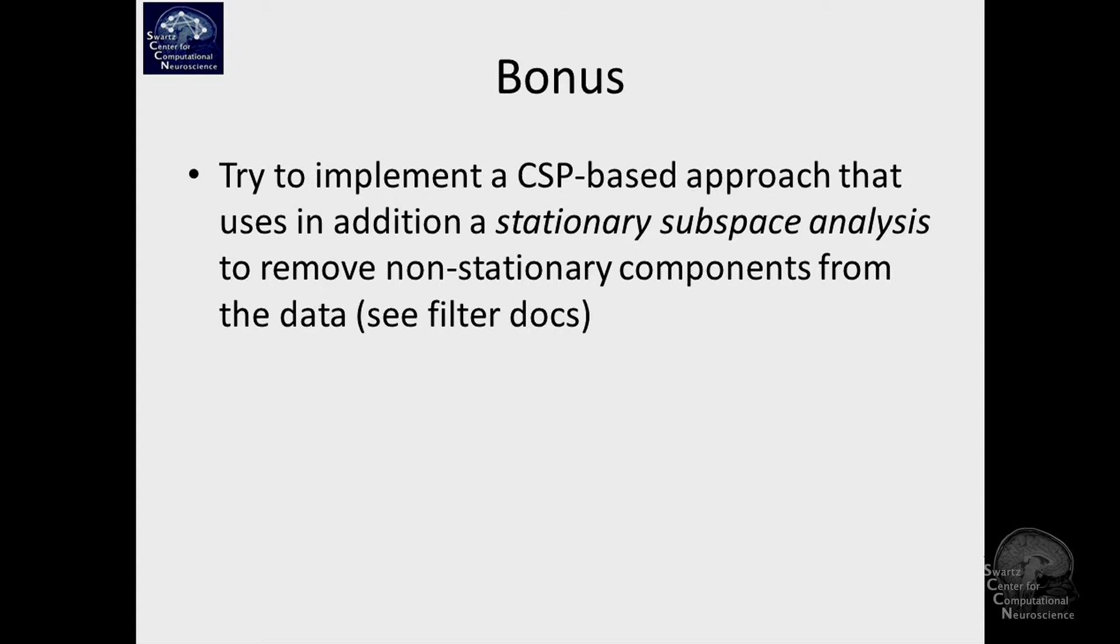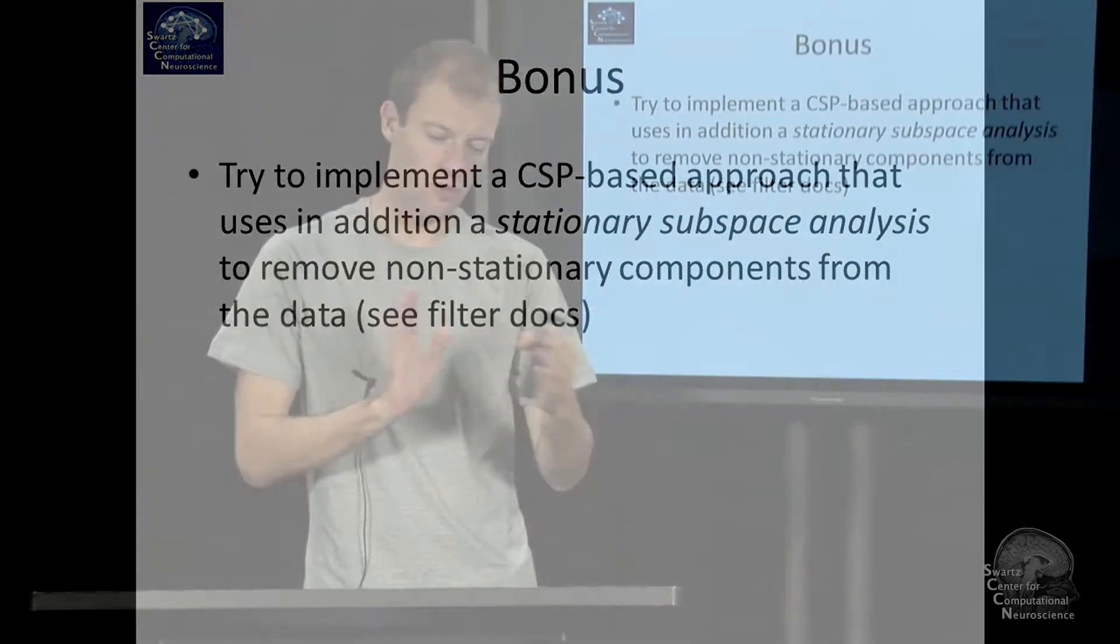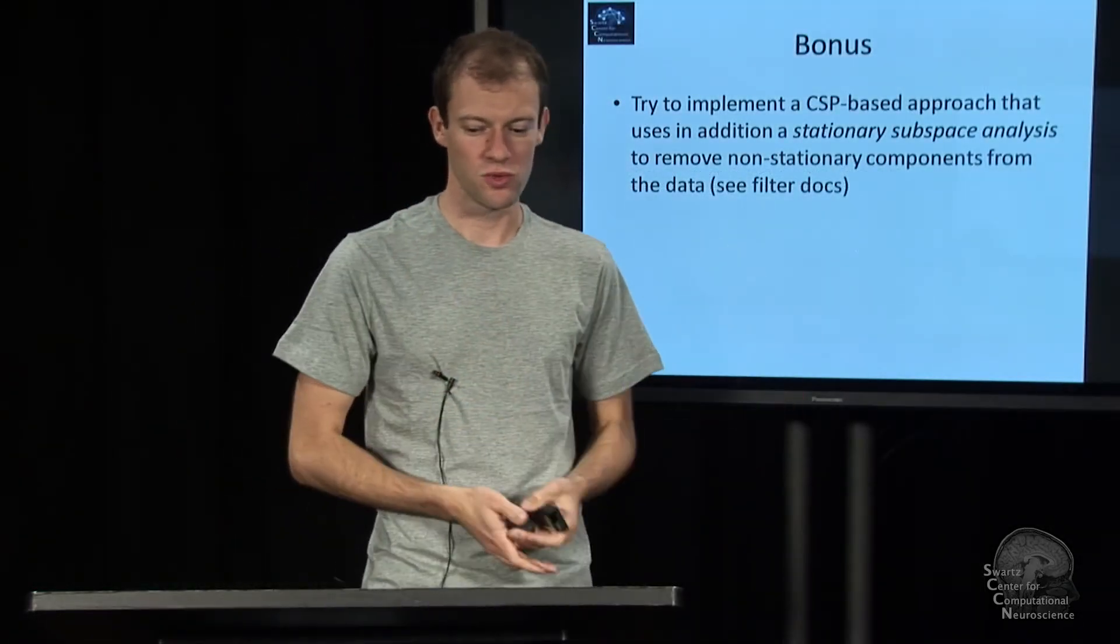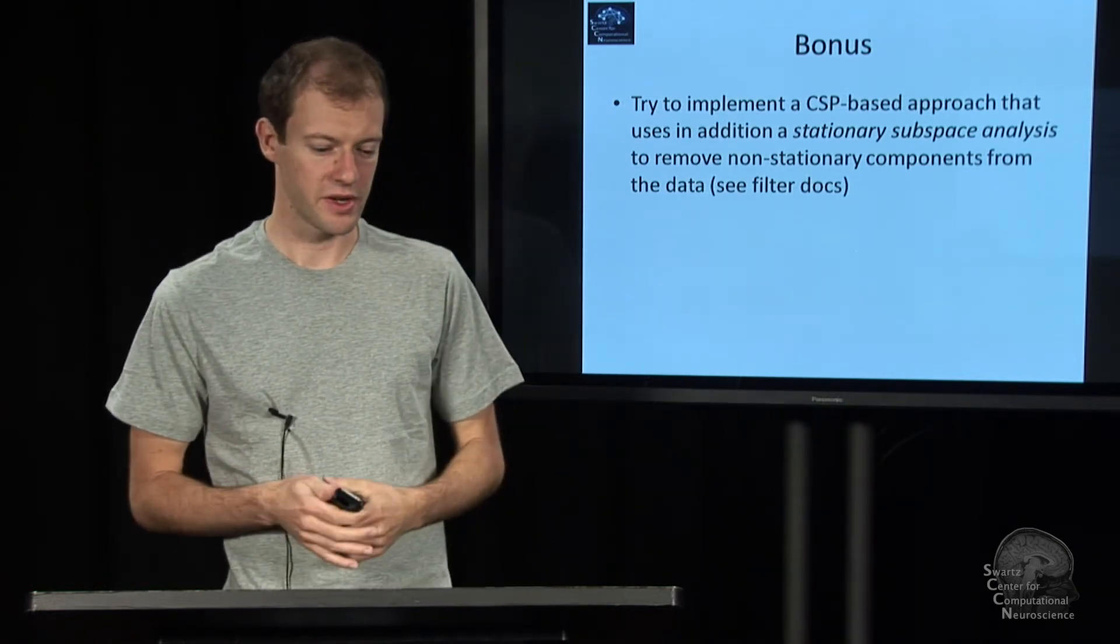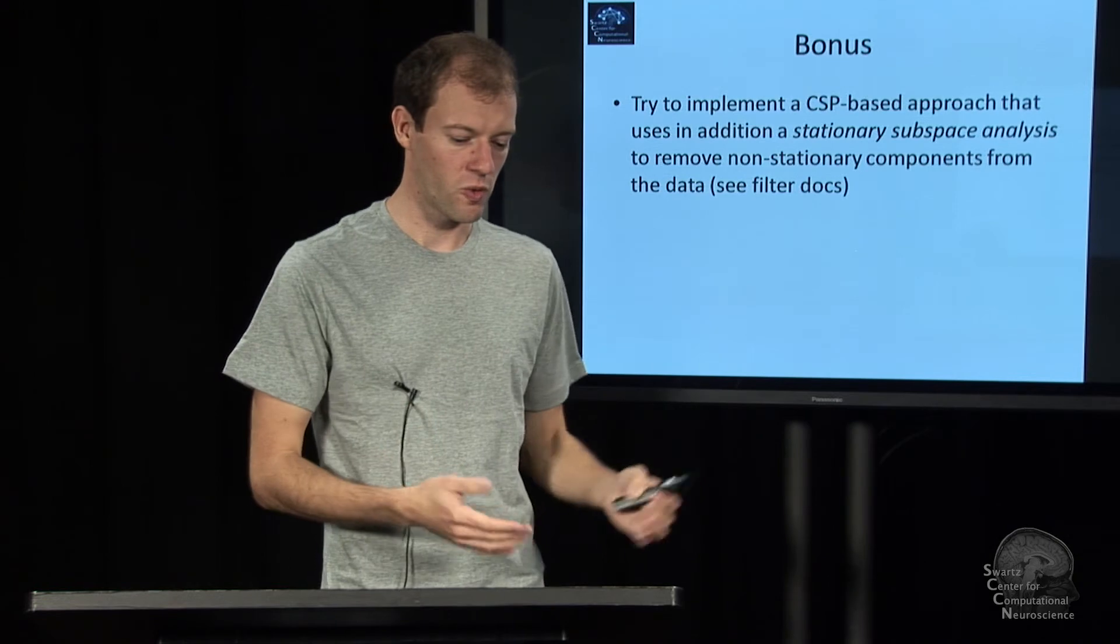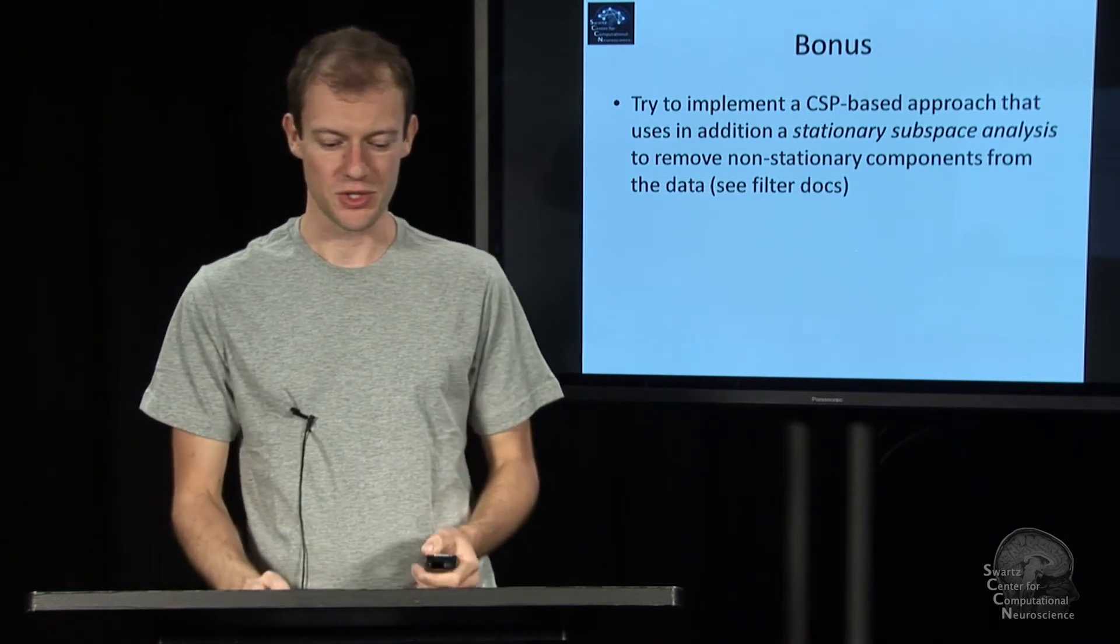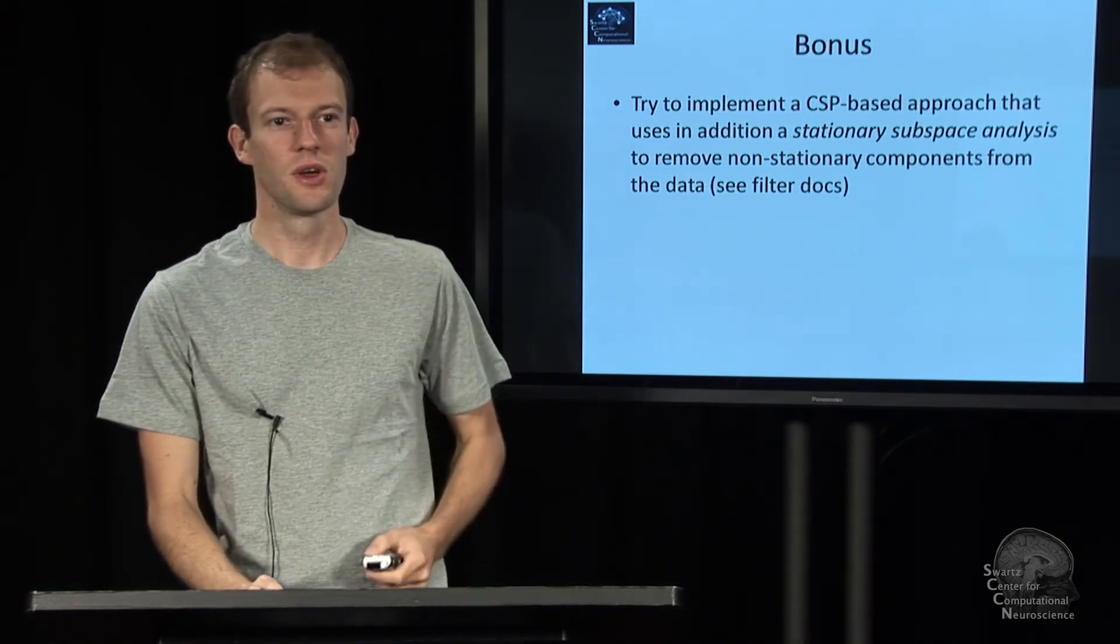And if you really wanted to go all the way, this function has a free parameter, which is how many stationary components it should retain. And you can make this a parameter search and search over everything from zero components to 10 components or something. And so you basically automatically optimize then over this parameter and quantify how well you're doing. So that's just for those who really want to push the boundaries of the toolbox and their computation time budget. Good luck with that.